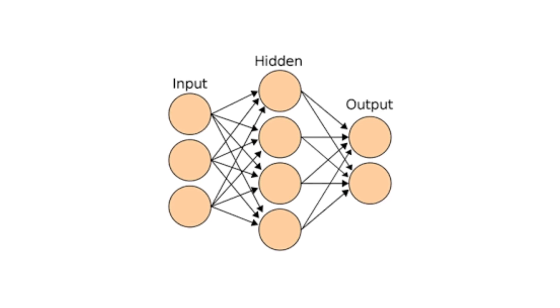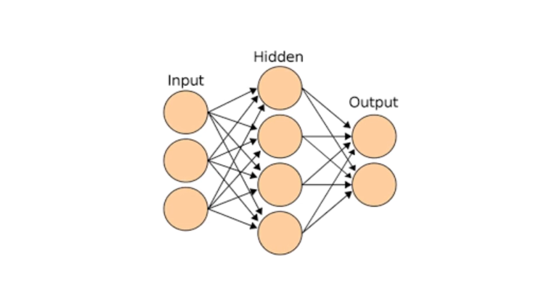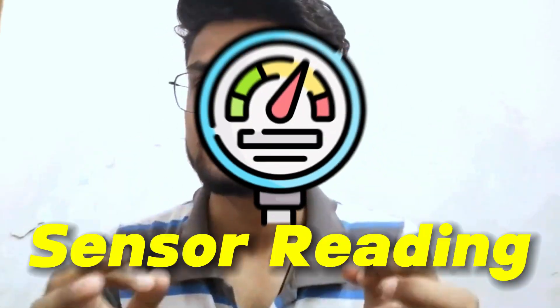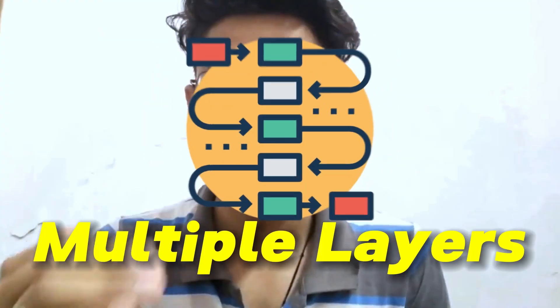The input layer is the very first layer of any AI model, which receives the input from the user. That input can be present in any form — it can be audio, video, text, or sensor readings. The AI model then processes the input information through multiple layers where the magic happens.